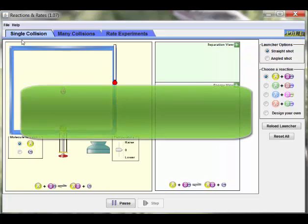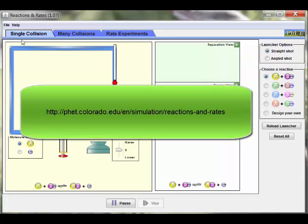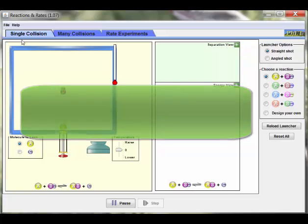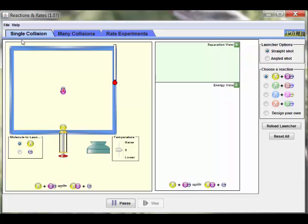Welcome. This screencast is designed to accompany the PhET simulation titled Reactions and Rates. The simulation can be found at the website on the screen, or follow the link below. This screencast will walk you through some of the basic elements of the simulation. Please note that to use the simulation on your own computer, you'll have to have Java installed.